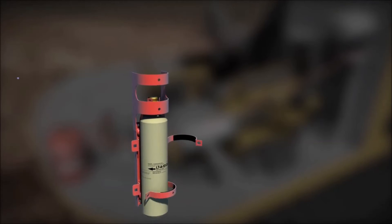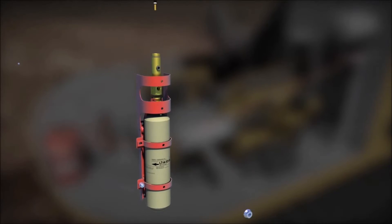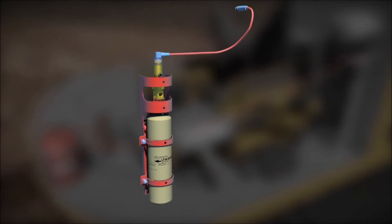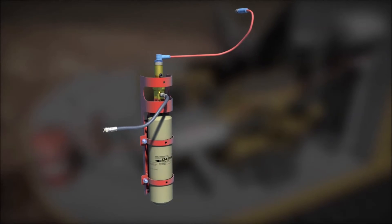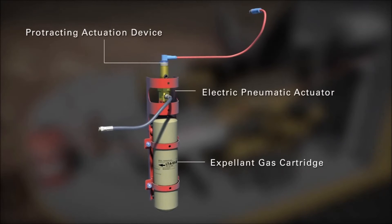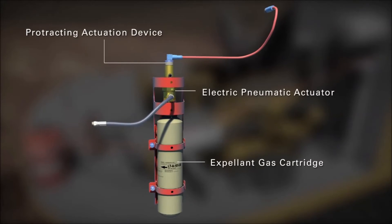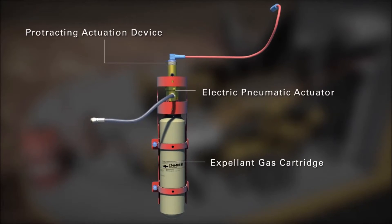The protracting actuation device or PAD is installed in the electric pneumatic actuator which is mounted on the expellent gas cartridge located near the agent tank. The release circuit provides supervision from the CheckFire 110 system to the electric pneumatic actuator. The system can actuate a maximum of two electric pneumatic actuators.